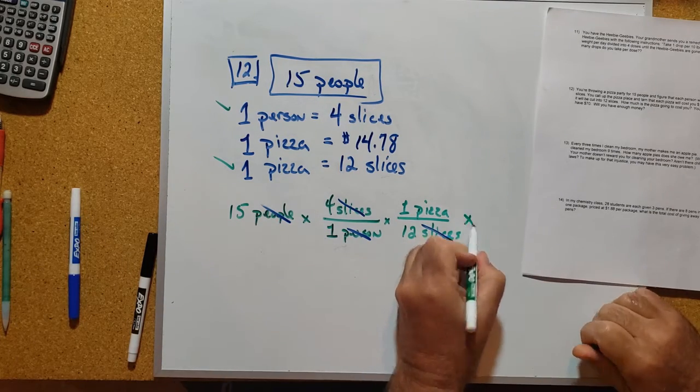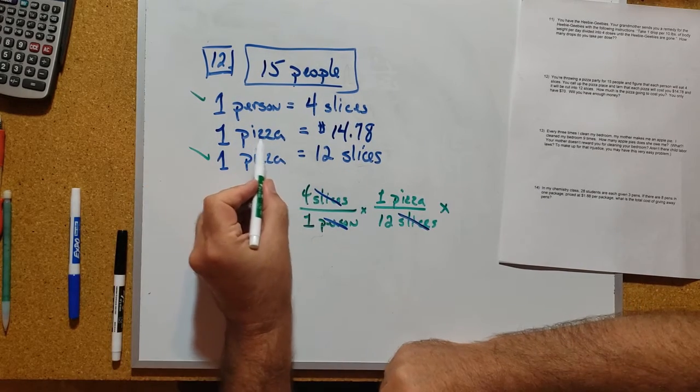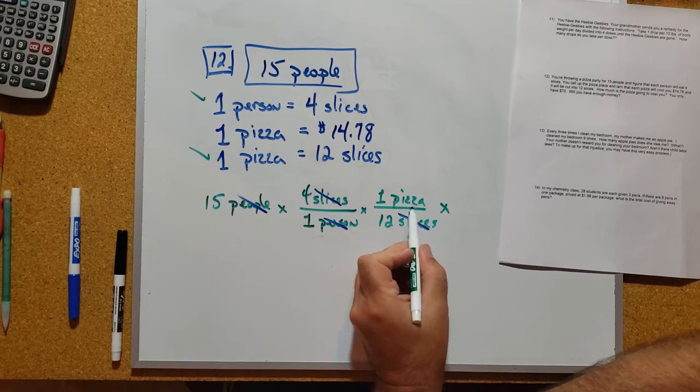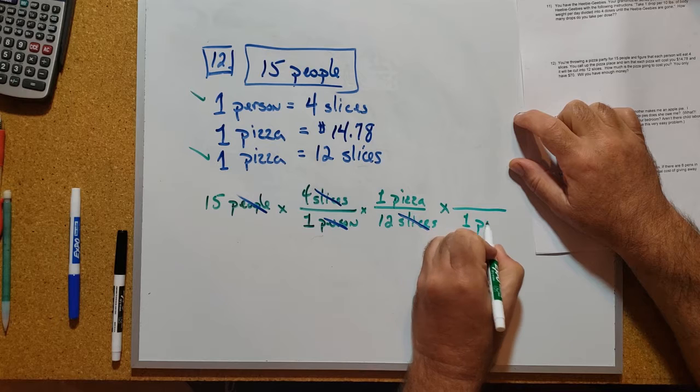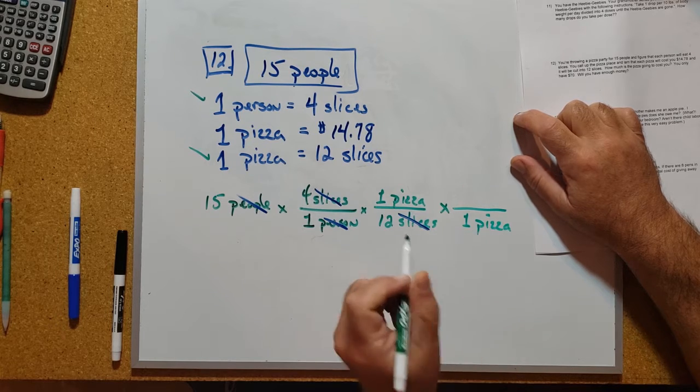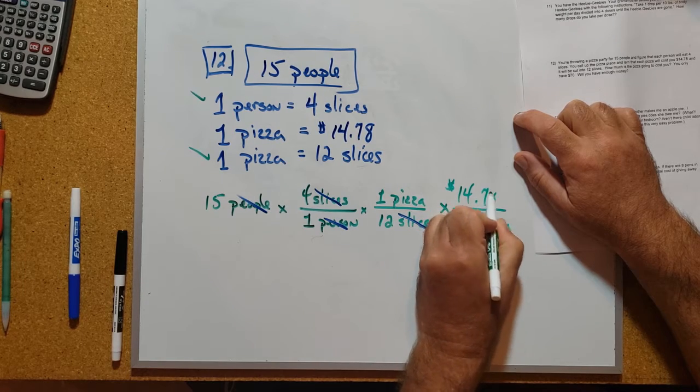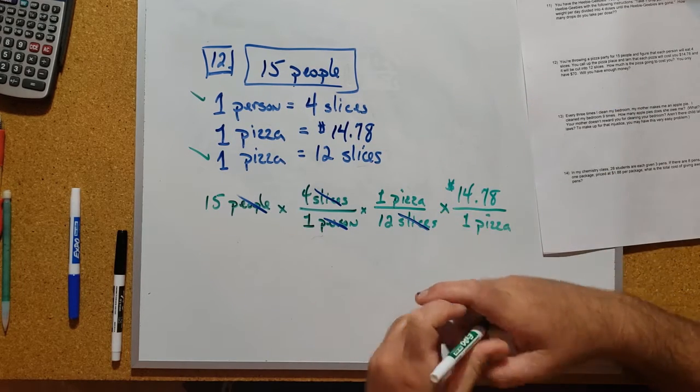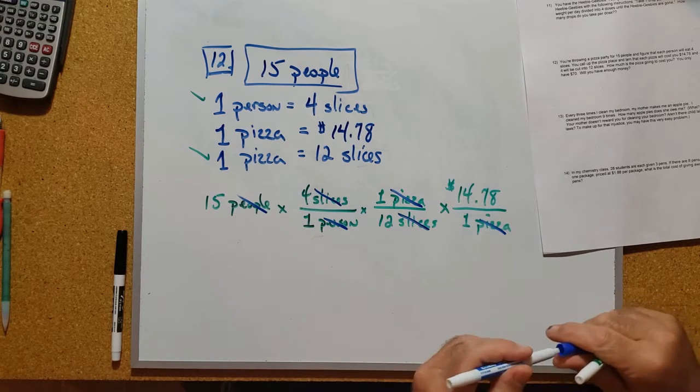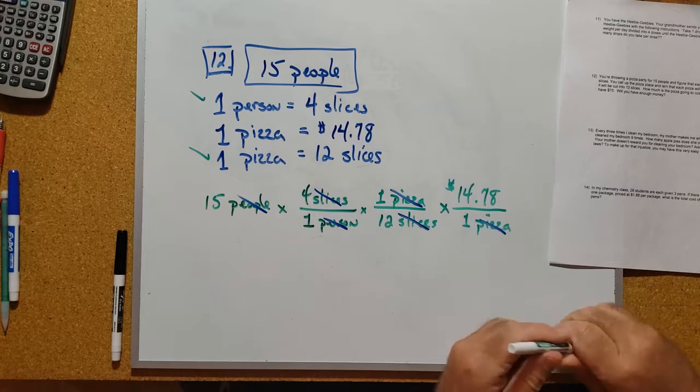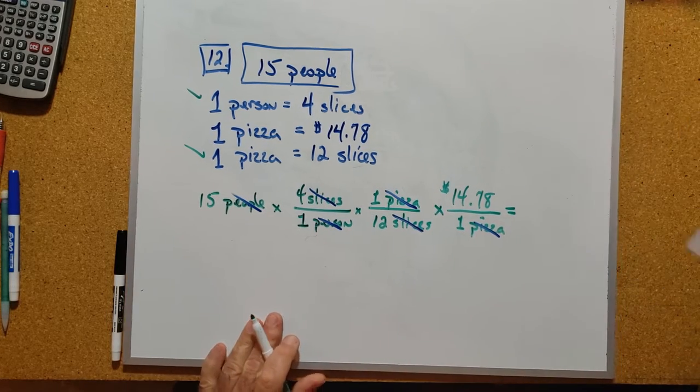Finally, we could get talking about the cost because we're told that one pizza is $14.78. I've got pizza units here, it fits in here perfect. One pizza is $14.78, and that allows me to cancel pizzas. The only unit I'm left with here is the units of dollars.